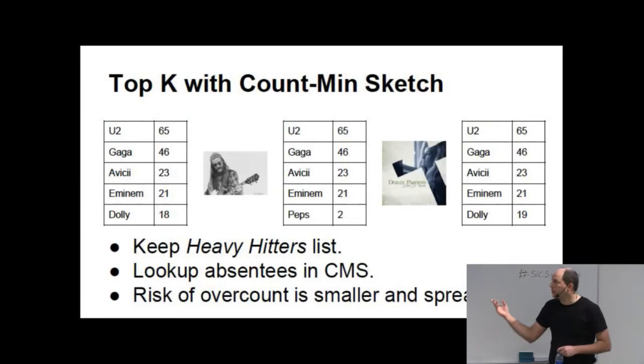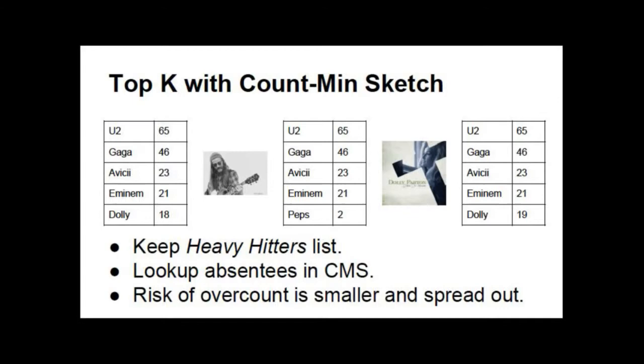Okay, you can actually use this to have a better implementation of the top K problem. Instead of assuming that your stuff, your absent stuff has the same value as the bottom, you can look it up in the count min sketch. And you keep a, in this case, it's not called the top K anymore. It's called the heavy hitters list. I think this terminology might come from Twitter. They use this technology to count the most popular tweets.